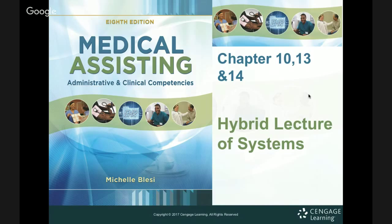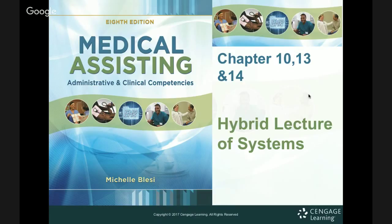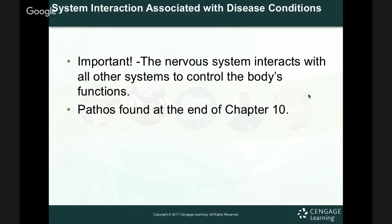We're going to look at chapters 10, 13, and 14. If you have your book, take it out — we'll go in chronological order starting at chapter 10, then 13 and 14. This is going to layer on top of each other, so I'd recommend watching first, making notes, and then going back into the chapters. We did a hybrid lecture of the systems, so buckle up. Remember, the nervous system interacts with all other systems to control the body's functions.